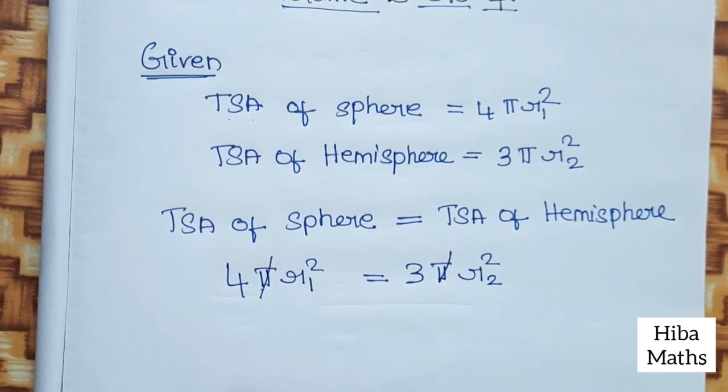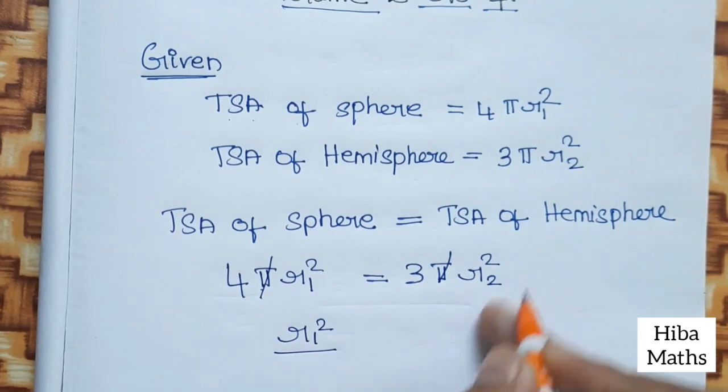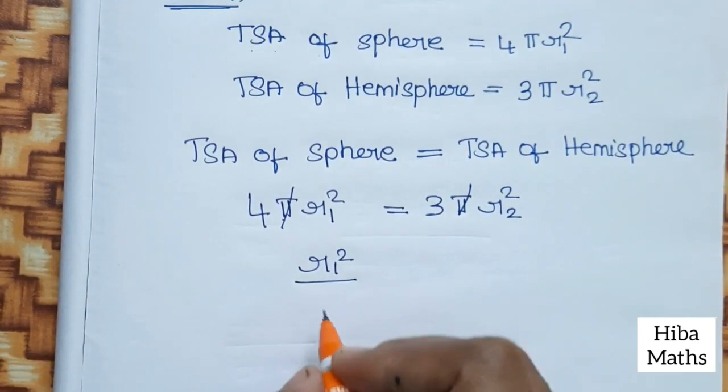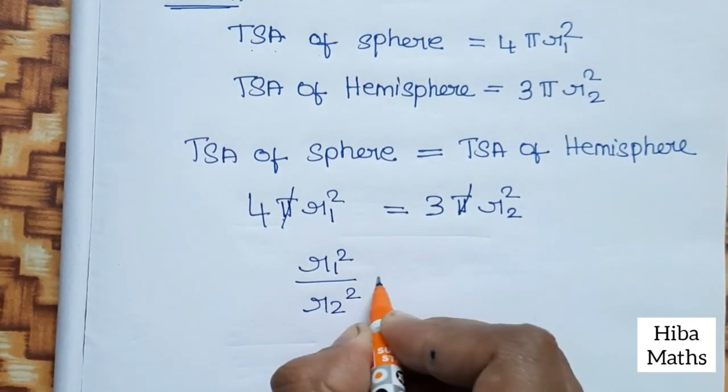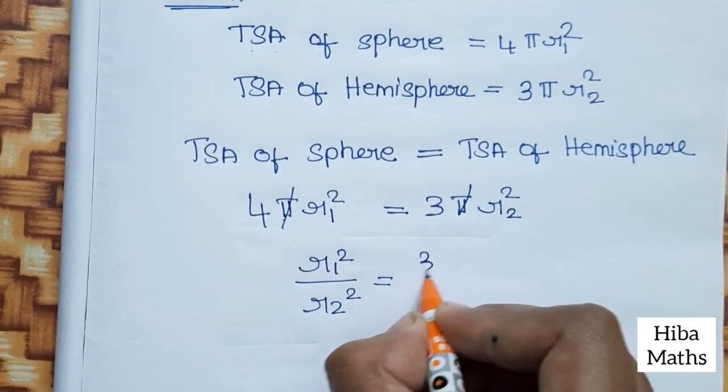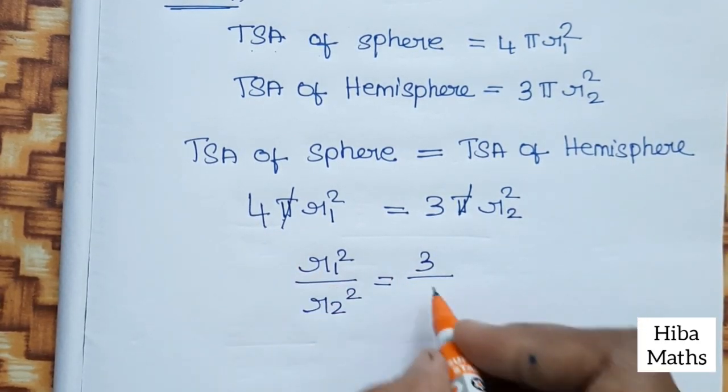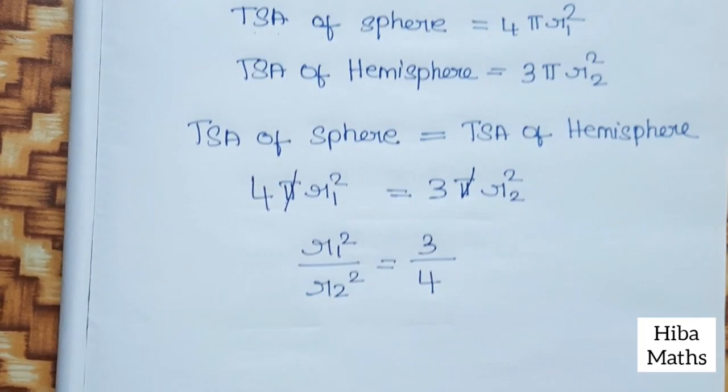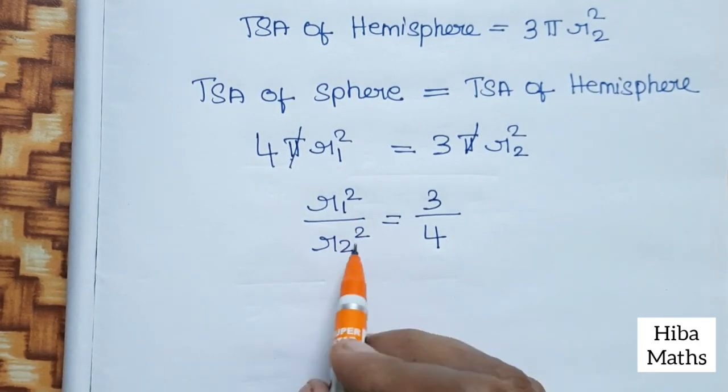So we are going to compare R₁ by r₂. R₁ square divided by r₂ square equals 3/4.